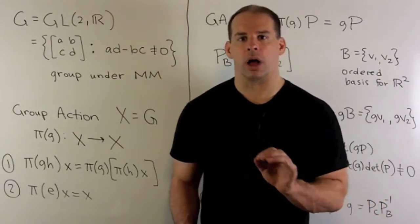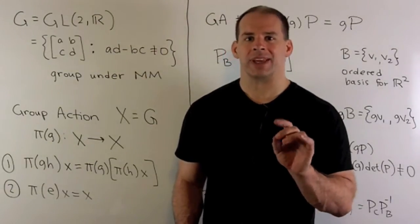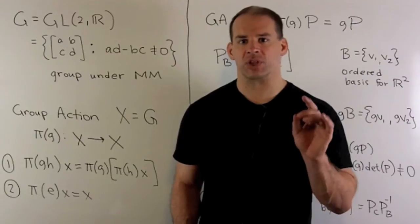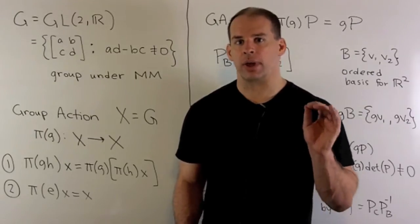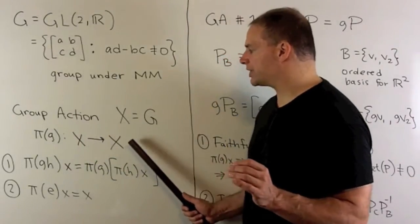Recall, for a group action, we're trying to exhibit our group G as a group of symmetries of the space X. So we'll have, for each G in our group, a map π(G) that carries X to itself.